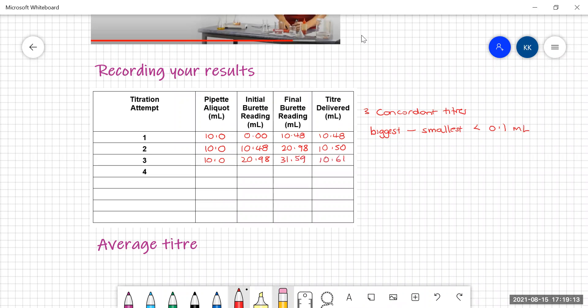And that's not good enough because the biggest minus the smallest, 10.61 take 10.48, that's equal to 0.13 mils. So I don't have concordance yet.